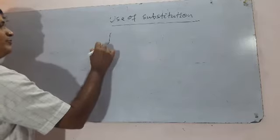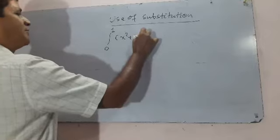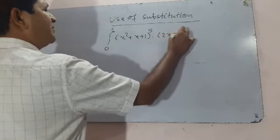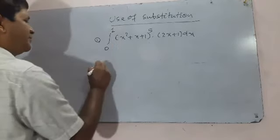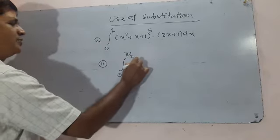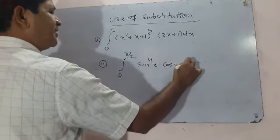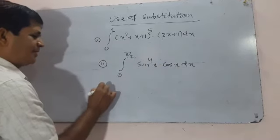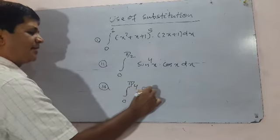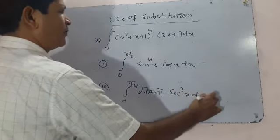Three problems using substitution: Part (a) integration from 0 to 1 of (x² + x + 1)⁵ × (2x + 1) dx. Part (b) integration from 0 to π/2 of sin⁴x × cos x dx. Part (c) integration from 0 to π/4 of √tan x × sec²x dx.